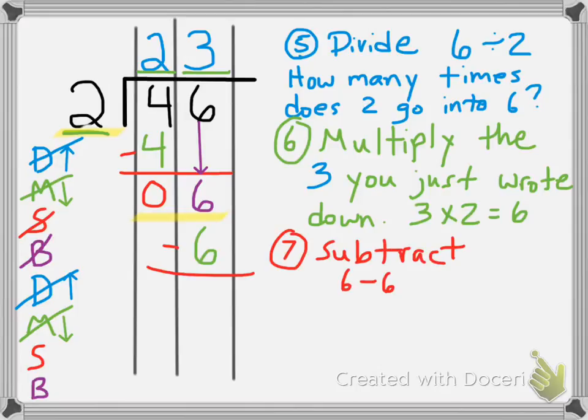Number 7 is subtract, so 6 minus 6 is 0, and I cross out my S in my DMSB's.